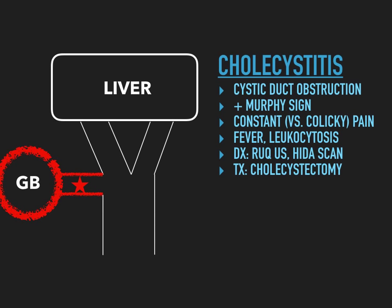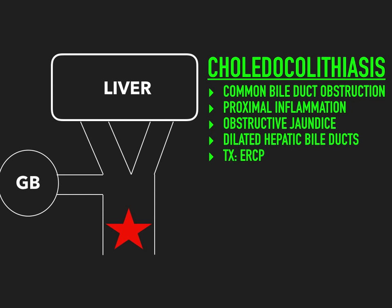The next pathology is choledocholithiasis. This is when a stone goes further and gets lodged in the common bile duct. 'Choledocho' means common bile duct — 'co' for common — and 'lithiasis' again means stones. So choledocholithiasis is a stone in the common bile duct. This causes a common bile duct obstruction with some proximal inflammation, but usually there is no fever and no leukocytosis — it's typically a non-inflammatory process.